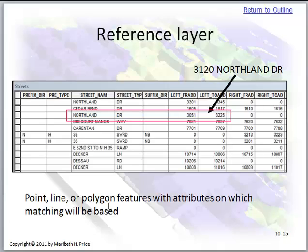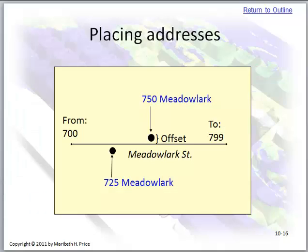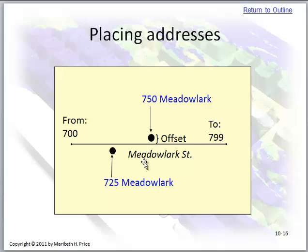Here we have a reference layer of point, line, or polygon features with attributes on which matching will be based. We'll be using a line layer placing addresses, and there's an offset. For example, a segment goes from 700 to 799 — so 750 would be right in the middle, and 725 would be in the middle of the lower half. That's how ArcGIS places the addresses.